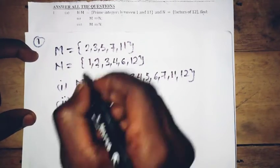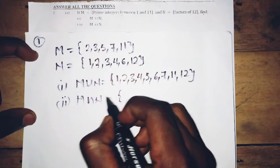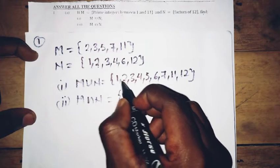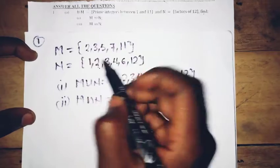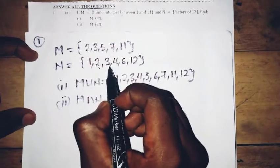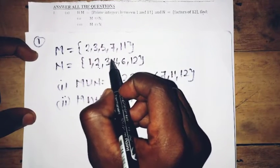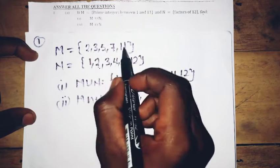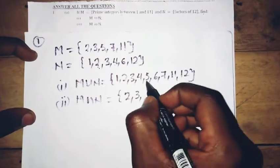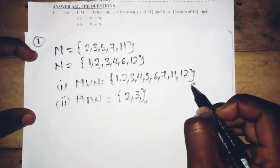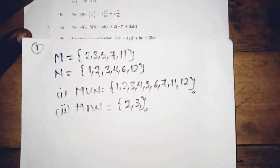Part II asks for M intersection N. Intersection means numbers which are in both M and N. We check: 2 is in both, 3 is in both, 5 is not in N, 7 is not in N, 11 is not in N, 12 is not in M. So the intersection is {2, 3}. That is the answer for Question 1.